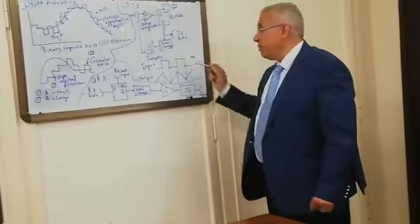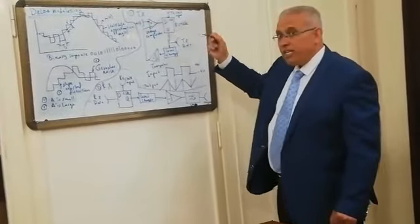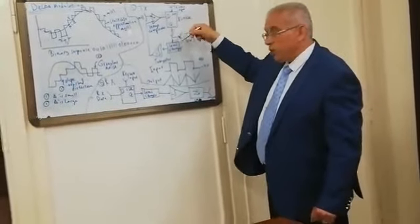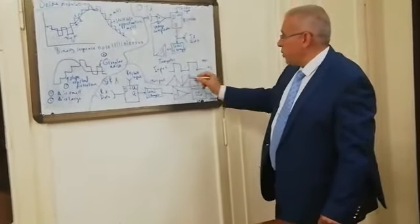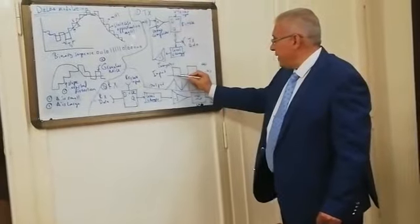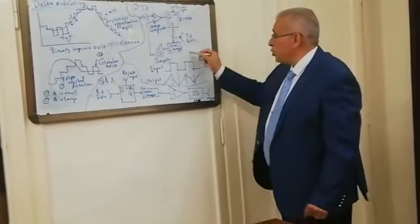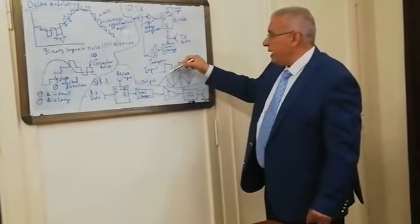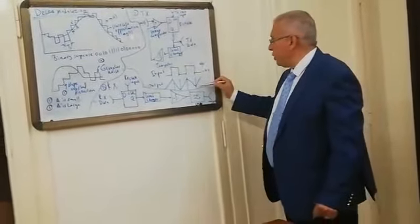The level changer converts logic one — corresponding to plus five volts — into plus four volts, and logic zero — corresponding to zero volts — into minus four volts. So the output of the level changer is either plus four volts or minus four volts. The integrator provides a ramp output, trying to follow the output of the level changer. If the level changer output is plus four volts, the integrator ramps down; if it is minus four volts, the integrator ramps up.